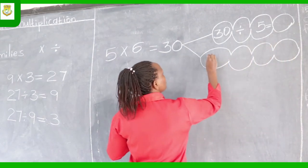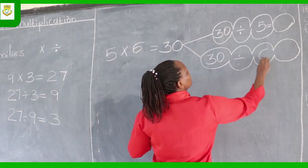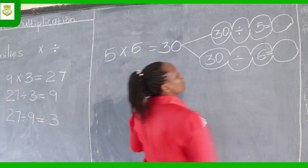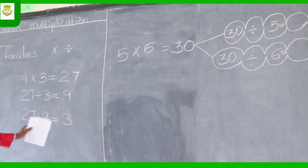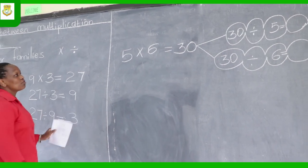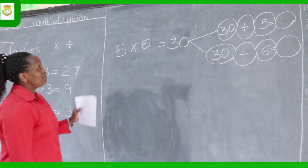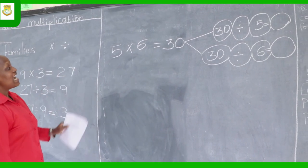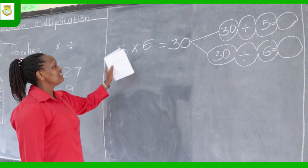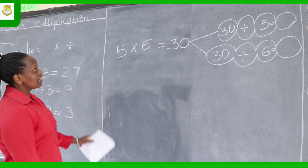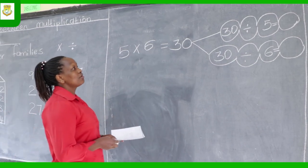And 30 divided by 6 equals. When we talk about number families, we do not calculate. We look at the family — and every problem has different members. For this particular one, we have 5, 6 and 30. Every multiplication problem has an opposite division problem.